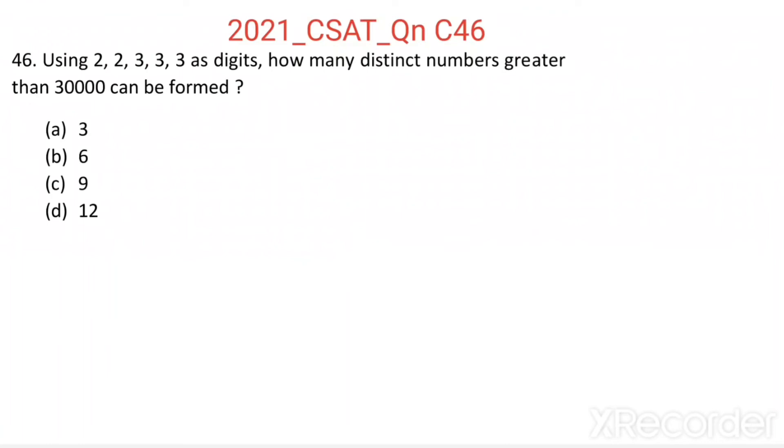Question Number 46. Using 2, 2, 3, 3, 3 as digits, how many distinct numbers greater than 30000 can be formed?